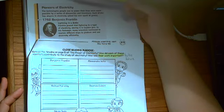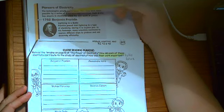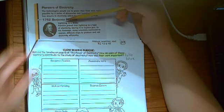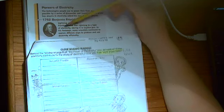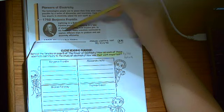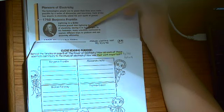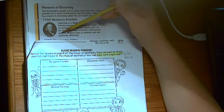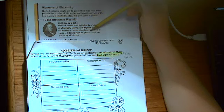So what did Benjamin Franklin invent or prove? Franklin proved that lightning is a type of electricity, storing it in Leyden jars. In his footsteps many scientists continued to explore different ways to produce and use electricity efficiently.